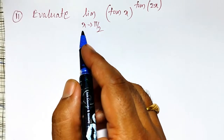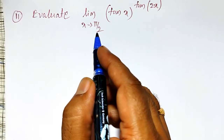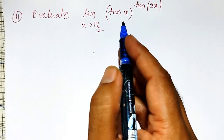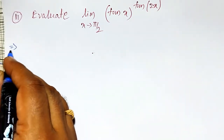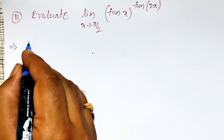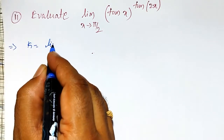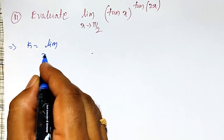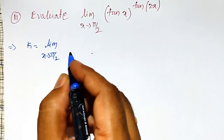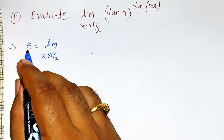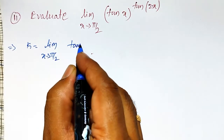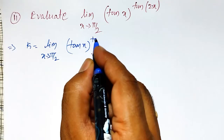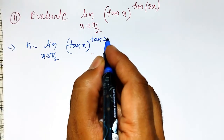In this video, I am going to evaluate the limit as x tends to π/2 of (tan x) raised to the power tan(2x). Let me call this as k, equal to the limit as x tends to π/2, so that value is going to tend to k. That is tan x raised to tan(2x).